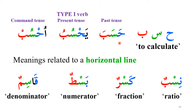This level meaning is very deep. 'Hasaba,' 'Yasubu' means to calculate. Ha means Hamala — to carry, or an input; Ba is Vata — to get, or an output; and Seen is the central processing unit of the computer. So 'Hasaba' means to compute or to calculate.